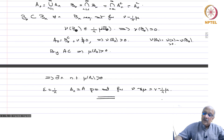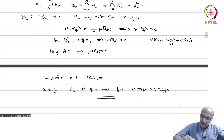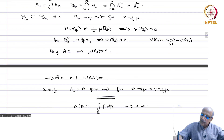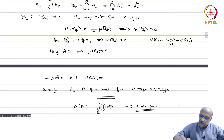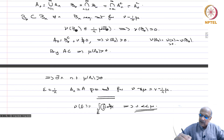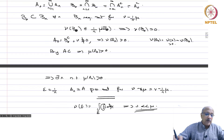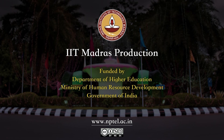We have done all the preliminary work necessary. The important theorem we will now approach is to show that just as nu(E) = ∫_E f dmu implies nu is absolutely continuous with respect to mu, we will show in the sigma-finite case that whenever nu is absolutely continuous with respect to mu, one can always find f such that nu(E) = ∫_E f dmu. This is the famous Radon-Nikodym theorem, which we will prove next time.